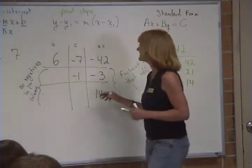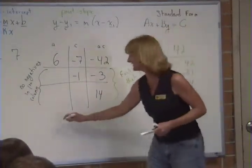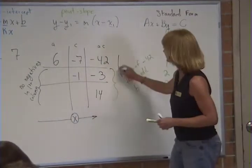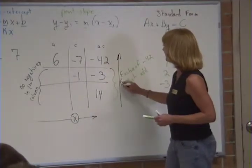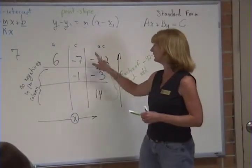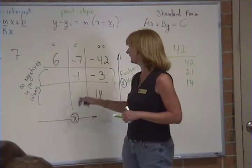Okay. So the only way to complete this, this is a magic square where you multiply going across and you multiply going up and it has to be a true statement in both directions. 6 times negative 7 is negative 42. What times negative 1 is negative 3?